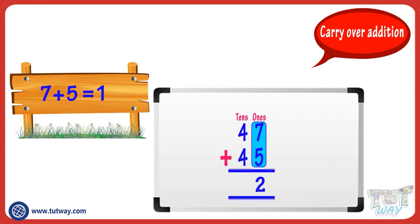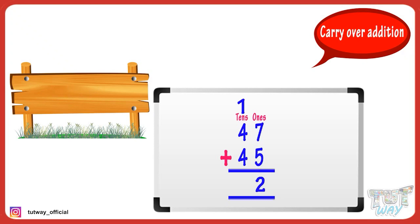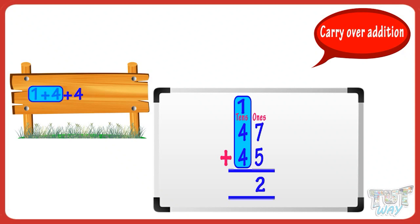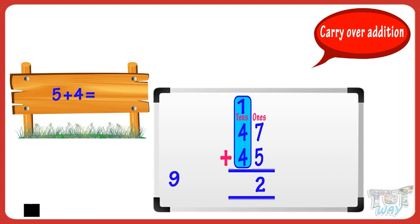Below the ones place digits, and carry over the tens digit and write it above the tens digits. Now add the three digits in the tens place: one plus four plus four. One plus four equals five, and five plus four equals nine. Now write the sum of the tens digits below the tens digits.